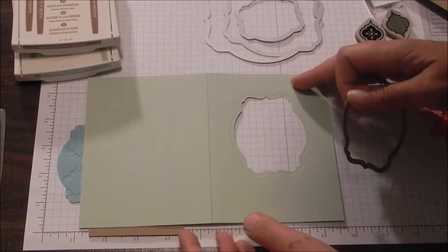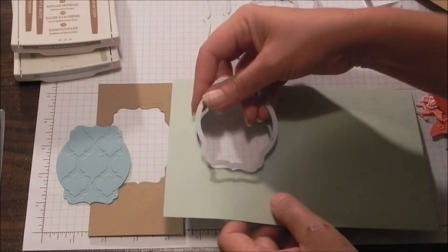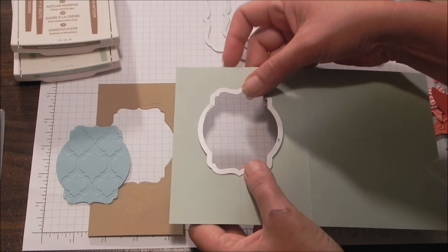So I've got my pistachio pudding. I actually mark it on the inside so I've got it positioned exactly when I run it through the big shot.